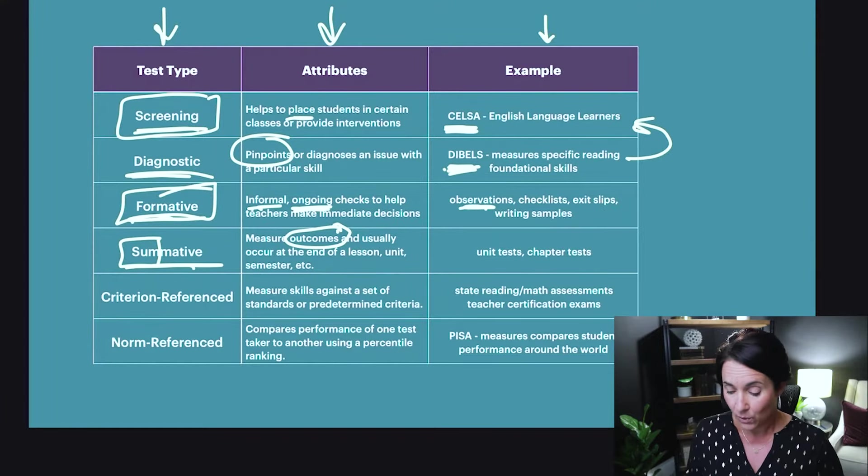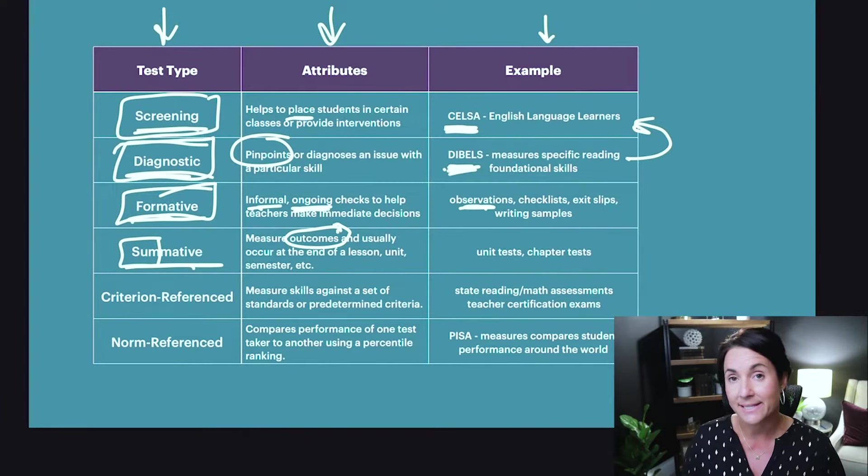Summatives measure outcomes. You might use a summative to measure a strategy or program you're using. For example, if you're using a new reading program, you take a pre-test — which is often a diagnostic — to see where kids are. You teach, do some activities, and then do a post-test or summative at the end to measure whether students achieved. Summatives typically happen at the end — unit tests, chapter tests, anything at the end of learning.